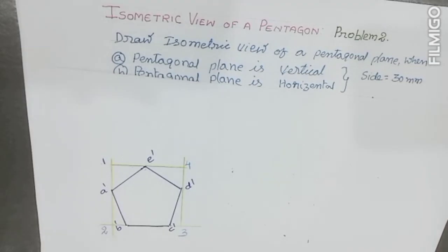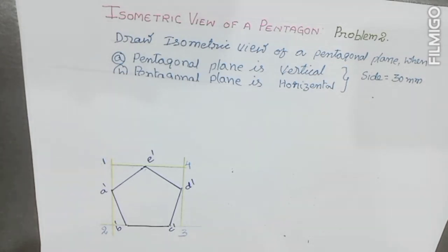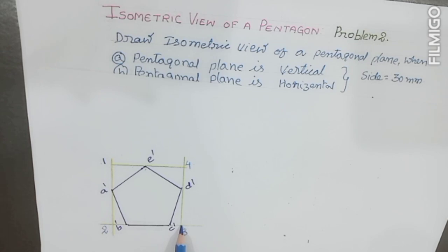With reference to the rectangle, we have to draw the isometric view of the pentagon. When the plane is vertical, the pentagon can stand on either 2 points or 3 points on the ground. I am first tilting this vertical face towards the left, and then towards the right.